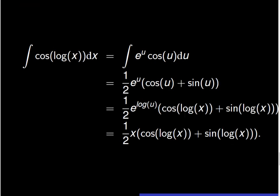In sum, the integral of cosine of log of x is equal to the integral of exponential of u times cosine of u du, which equals one half times exponential of u times the sum of cosine and sine of u. When we replace u by log of x, we have the final expression of the antiderivative as one half times x times the sum of cosine of log of x and sine of log of x.